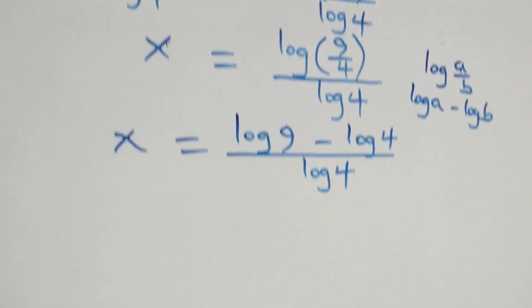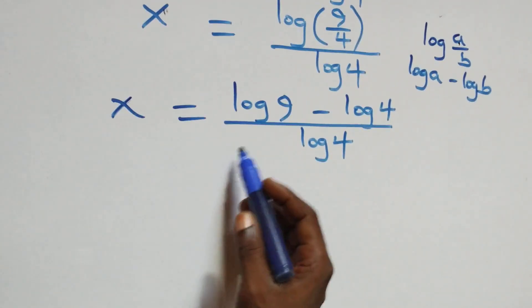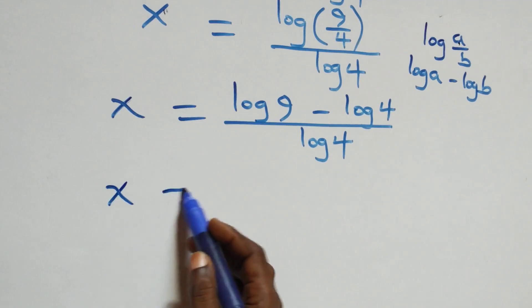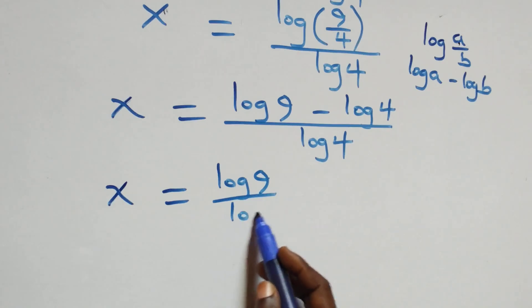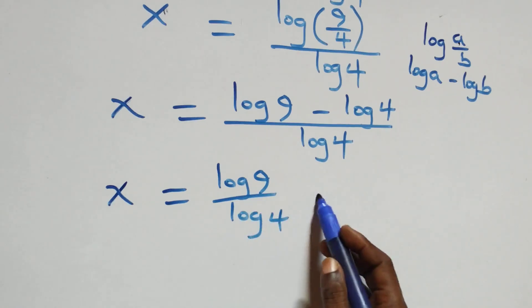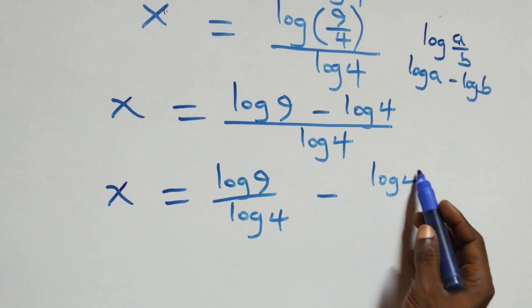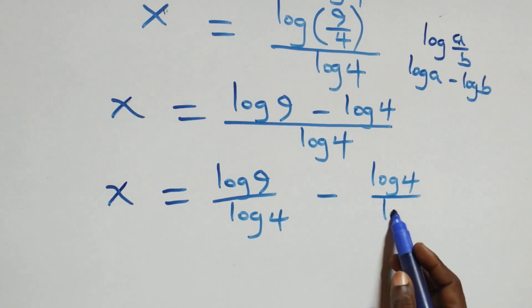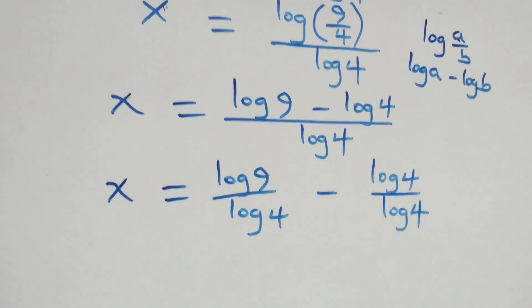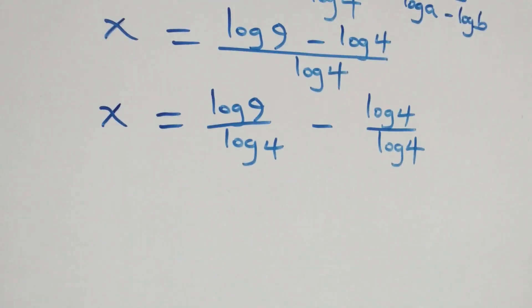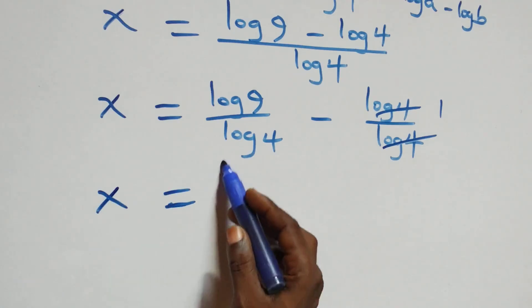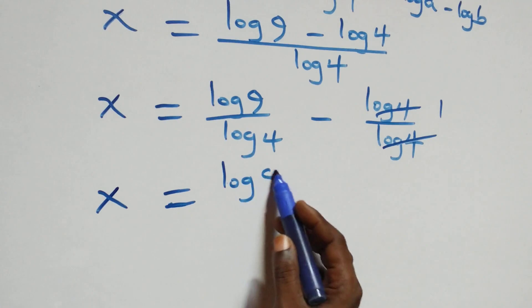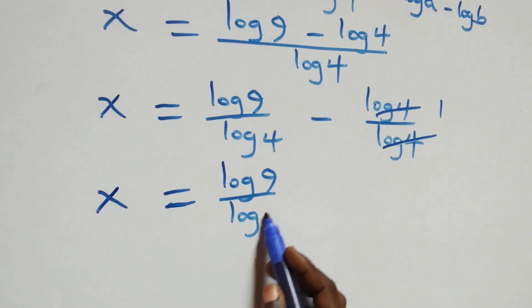We separate this into two fractions: x equals log 9 over log 4 minus log 4 over log 4. The log 4 over log 4 cancels to give 1, which implies x equals log 9 over log 4 minus 1.